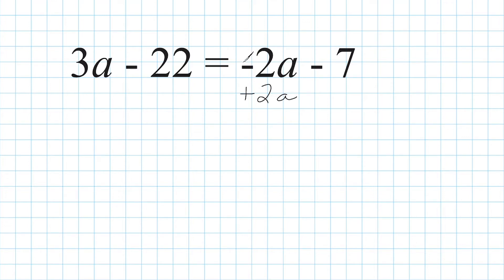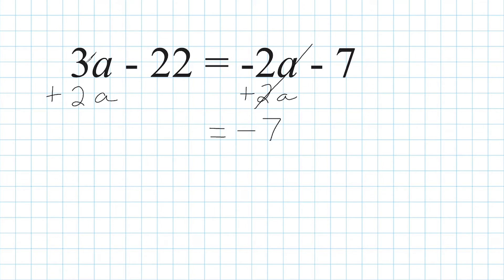So what we're going to do is take this negative 2a and move it to the left-hand side of our equation by adding 2a on this side. Because this is negative 2a and this is positive 2a, that cancels out to be nothing or zero. So we are going to add 2a on the left-hand side. Now we bring down this minus 7 and we add 3a and 2a which is 5a, and bring down this minus 22.